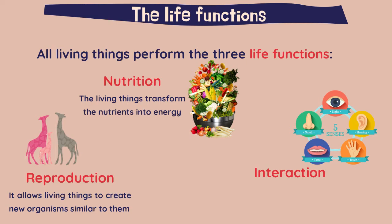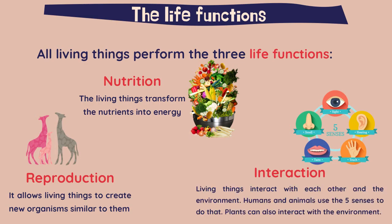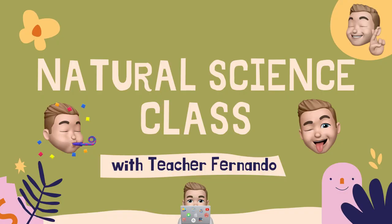Reproduction is very important because it allows living things to create new organisms similar to them — humans, for example, have babies. Finally, interaction: living things interact with each other and the environment. Humans and animals use the five senses — sight, hearing, touch, taste, and smell — to do that. Well, that was all for this video. I hope you liked it. See you in the next one, bye!